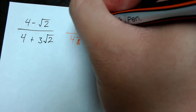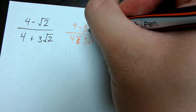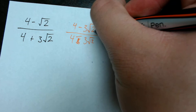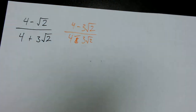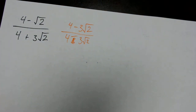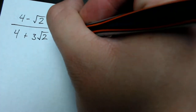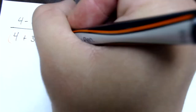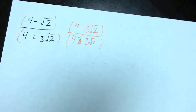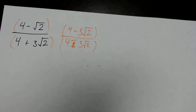We'll multiply both the numerator and the denominator by that conjugate, which is essentially multiplying by the value of 1 — not changing the number, just rewriting it. If you find multiple terms in a fraction, it's a good rule of thumb to go ahead and put them inside parentheses.